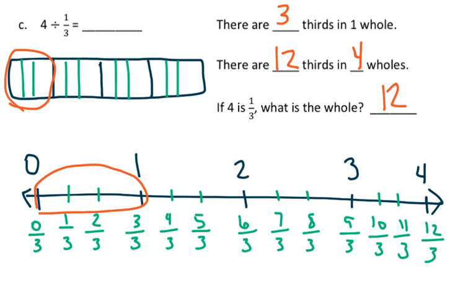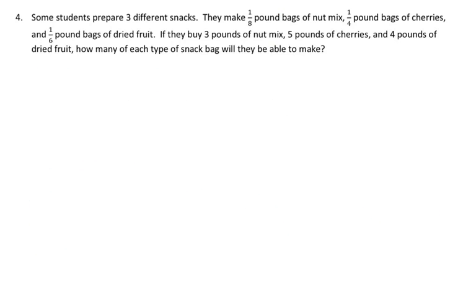Okay, so now let's take a look at question number 4. And number 4 says, some students prepare 3 different snacks. They make 1/8 pound bags of nut mix, 1/4 pound bags of cherries, and 1/6 pound bags of dried fruit. If they buy 3 pounds of nut mix, 5 pounds of cherries, and 4 pounds of dried fruit, how many of each type of snack bag will they be able to make?